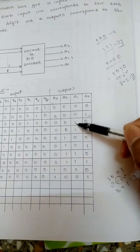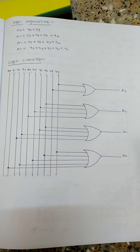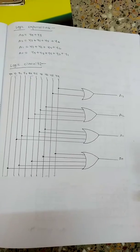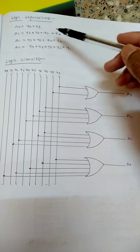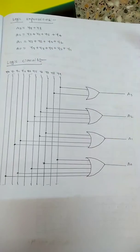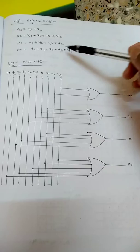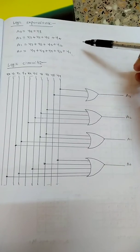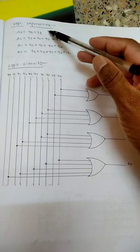Like this we will be getting four output expressions. This plus sign means we need OR gate. One, two, three, four, five inputs are there maximum. So we need one 5-input OR gate, one 4-input OR gate, one another 4-input OR gate, and one 2-input OR gate.